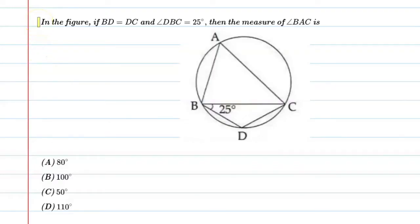Hello students, let's solve this question. In the figure, if BD is equal to DC and angle DBC is equal to 25 degrees, then the measure of angle BAC is?